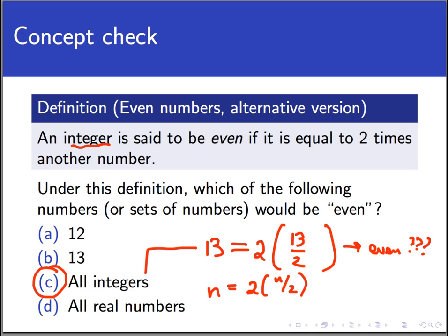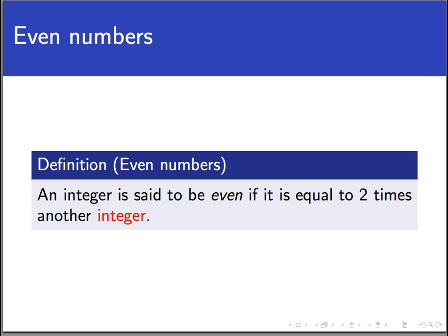So we can fix this definition in one little way here. And this will be our official definition of even. An integer is said to be even if it is equal to 2 times another integer. So if we require the number we multiply by 2 to get our integer to itself be an integer, instead of something like 13 halves, we're eliminating the possibility of 13 being even, because 13 is not 2 times an integer. It's 2 times a fraction.